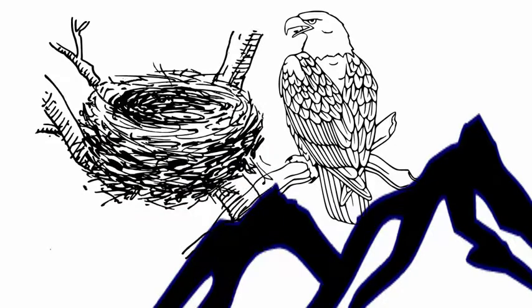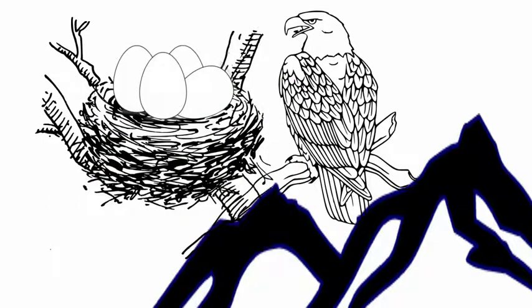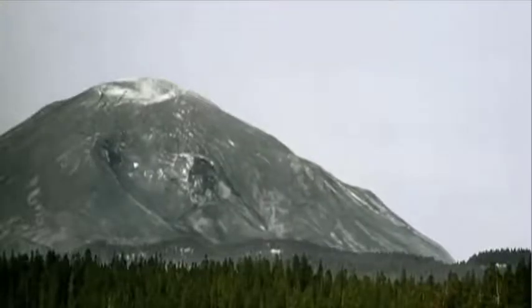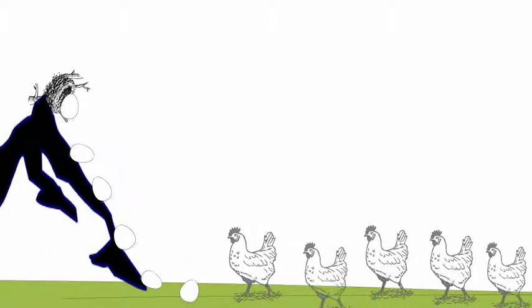The eagle's nest contained four large eagle eggs. One day an earthquake rocked the mountain, causing one of the eggs to roll down the mountain to a chicken farm located in the valley below.